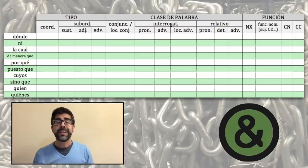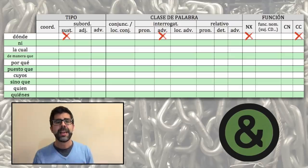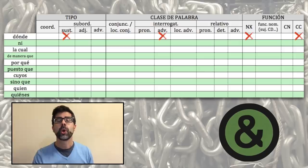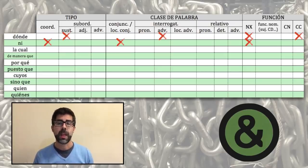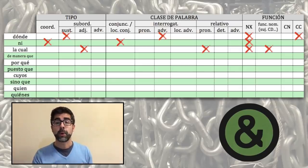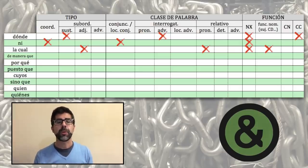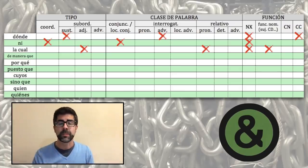La palabra 'dónde', por su parte, introduce proposiciones subordinadas sustantivas e interrogativas indirectas. Fíjate en la tilde. Es un adverbio interrogativo y, como tal, además de la de nexo, funciona dentro de la proposición como complemento circunstancial. La palabra 'ni' introduce proposiciones coordinadas copulativas y es una conjunción, por lo que solo funciona como nexo. El nexo 'la cual' introduce proposiciones subordinadas adjetivas o de relativo, porque es un pronombre relativo y, como tal, además de la de nexo, dentro de la proposición puede desempeñar funciones nominales, tales como sujeto o complemento directo.